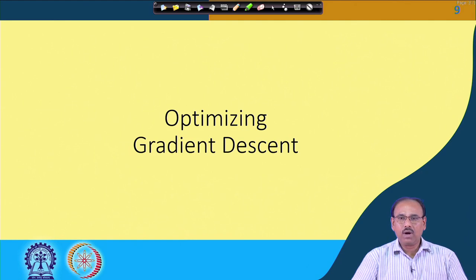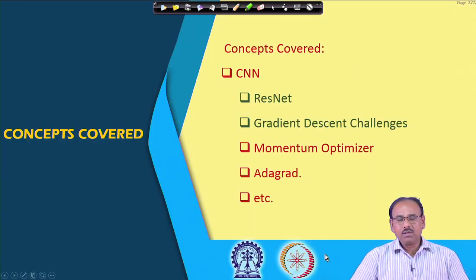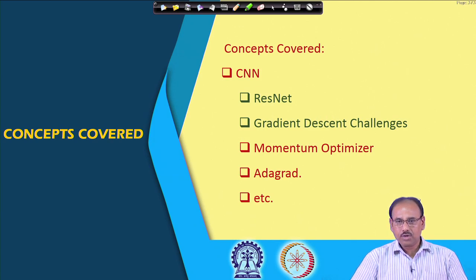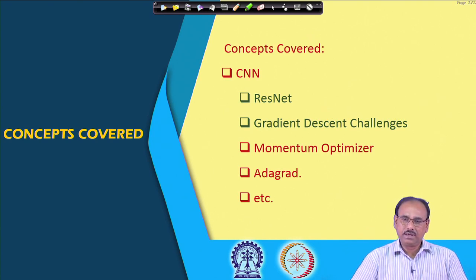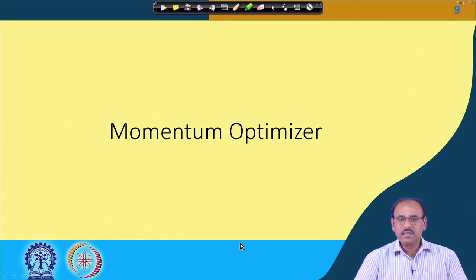To overcome these problems, we need to think of different approaches by which the gradient descent algorithm can be further optimized, making the back propagation learning algorithm more efficient. One such approach is the momentum optimizer. Today we will see different types of optimizers — one is the momentum optimizer and another is Adagrad — and we will discuss other optimizing techniques in subsequent lectures.